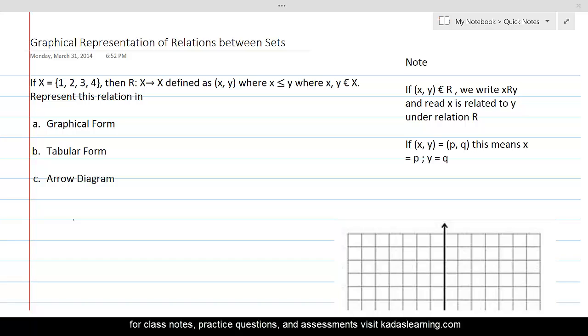Here, we are given a question in which we define a relation R on set X in such a way that R consists of all those ordered pairs (x, y) where x is less than or equal to y. Represent this relation in graphical form, tabular form, and arrow diagram.